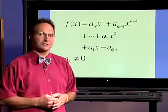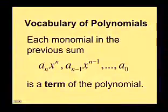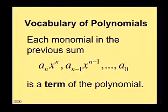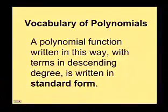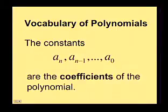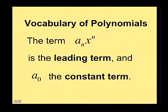Let's examine some important definitions associated with polynomial functions. Each monomial in the sum — aₙxⁿ, aₙ₋₁xⁿ⁻¹, all the way down to a₀ — is a term of the polynomial. A polynomial written with terms in descending degree is in standard form. The constants aₙ, aₙ₋₁, down to a₀ are the coefficients. The term aₙxⁿ is the leading term, and a₀ is the constant term.